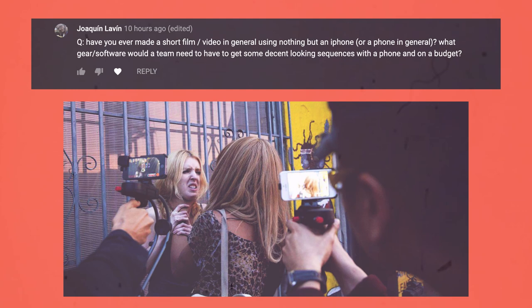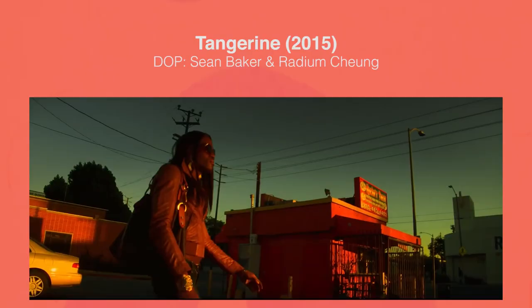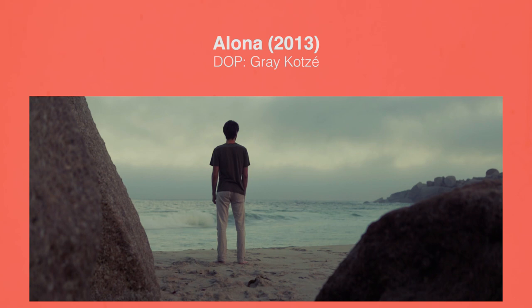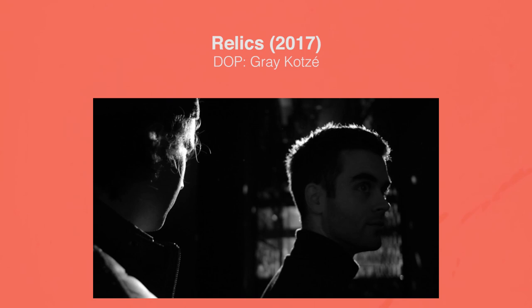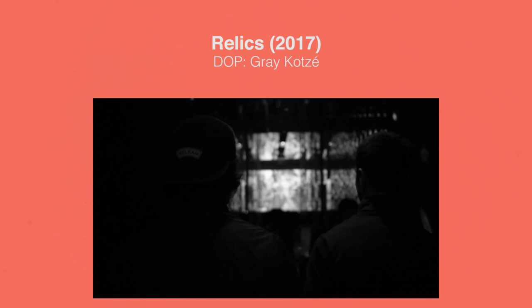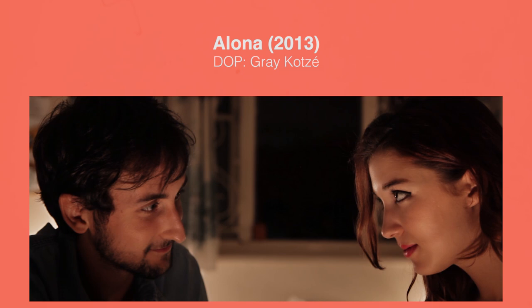The first question from McKinn is: have you ever made a short film or video using nothing but an iPhone? What gear or software would a team need to get some decent looking sequences with a phone and on a budget? I've never made a film on an iPhone, although I have made many shorts and even a feature using consumer DSLR cameras. Personally, I prefer using cheap DSLRs for low budget filmmaking over phones because it gives you access to different lenses and manual control over your camera settings and focus. You can also find some DSLRs for less than what an iPhone costs, so it's definitely something to consider.